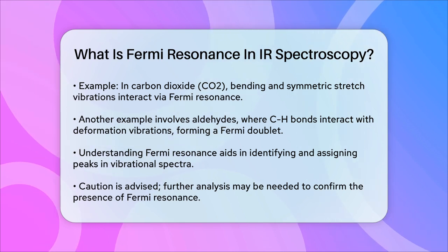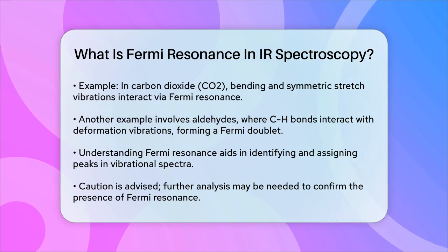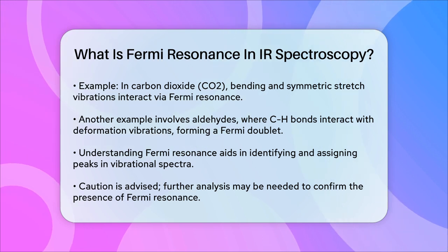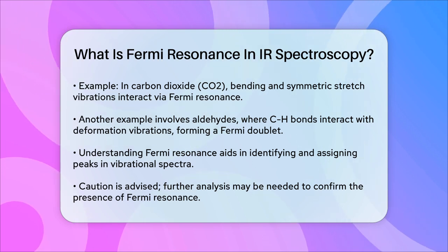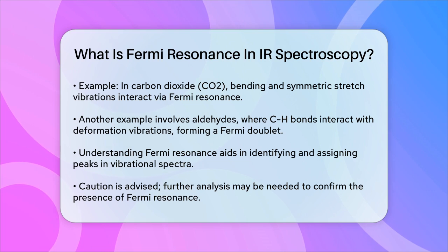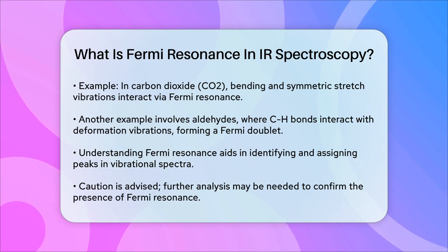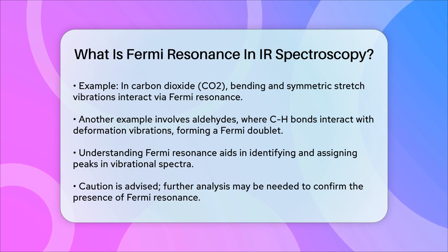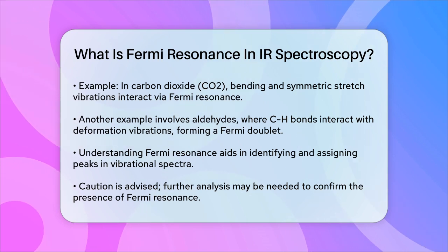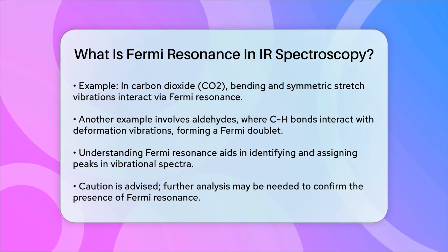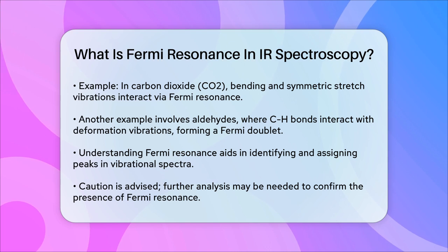In summary, Fermi resonance is a phenomenon where the energies and intensities of absorption bands in IR or Raman spectra shift due to the interaction between two vibrational modes with similar energies and symmetries. This helps explain and assign peaks in spectra that don't match known fundamental vibrations, making it a valuable tool in spectroscopic analysis.